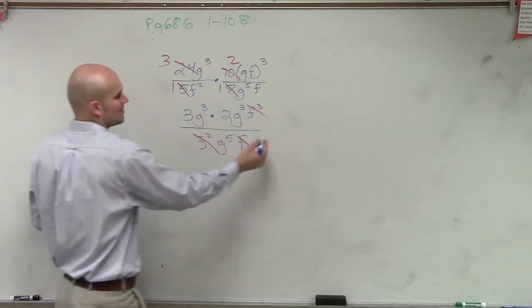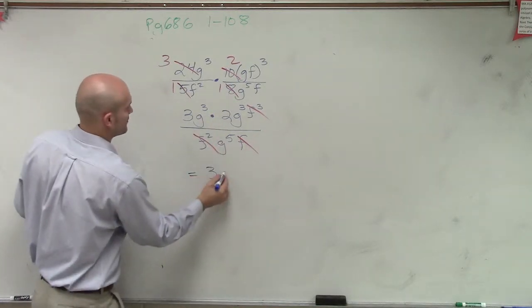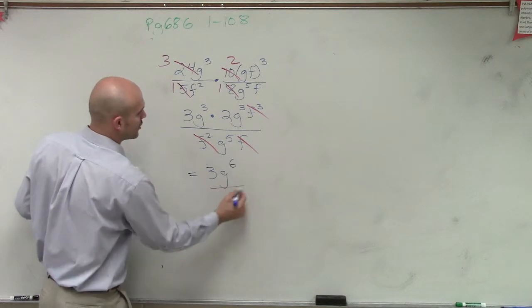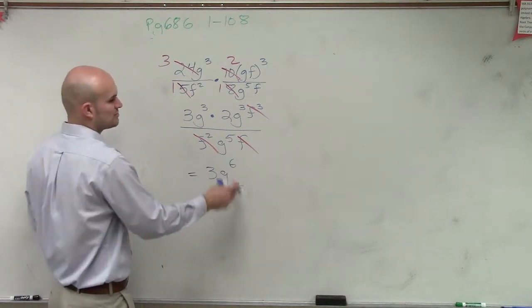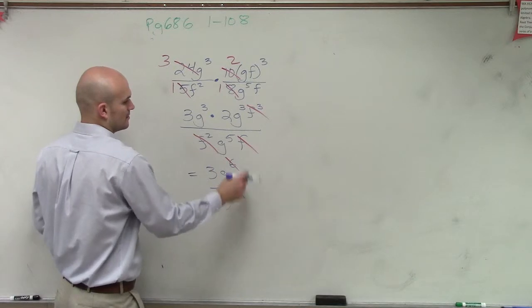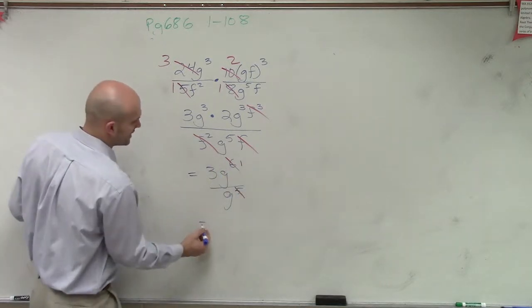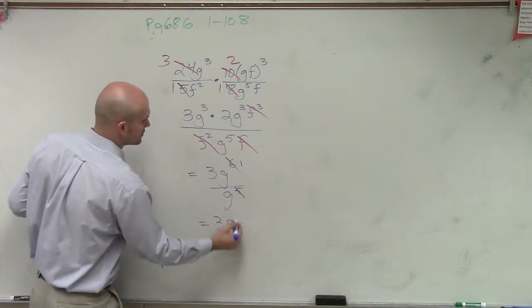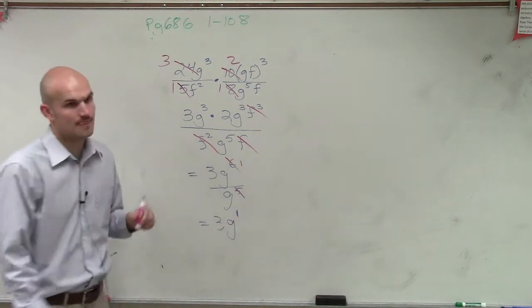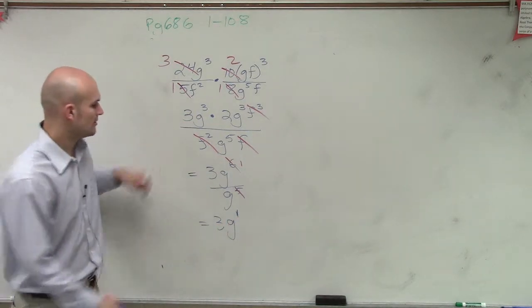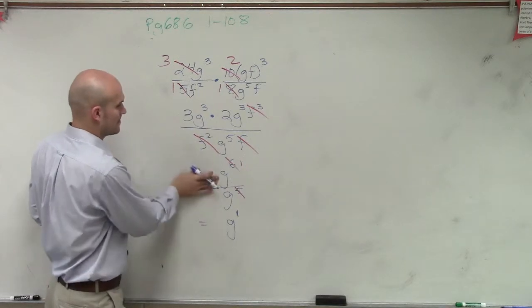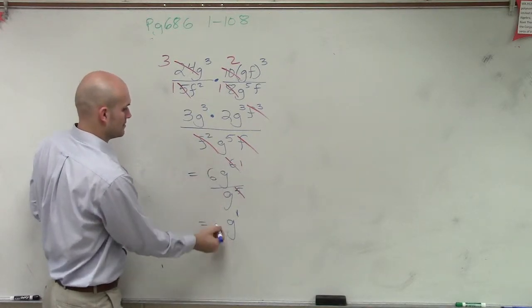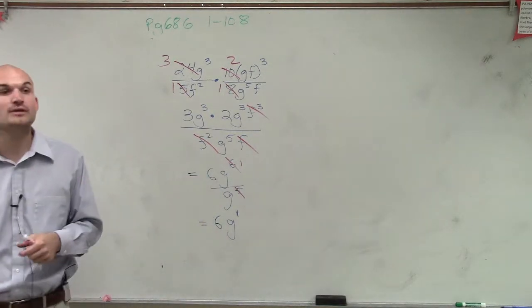And then over here, I'm going to finally get 3g to the 6th power over g to the 5th. Well, those you subtract to get g to the 1st. So the final answer is 3g to the 1st. What about that 2? Oh, that's the 6th, right? Yeah, I'm sorry, it's 6th. Thank you. So that's your final answer, 6g.